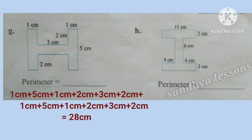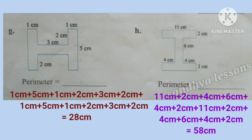G picture is an H shape with given measurements. Perimeter can be found by adding all the sides of the given shape. After adding, we get 28 cm. Therefore, perimeter of G picture is 28 cm. H picture is also an H shape with given measurements. By adding all the sides, we get 58 cm. Therefore, perimeter of H picture is 58 cm.